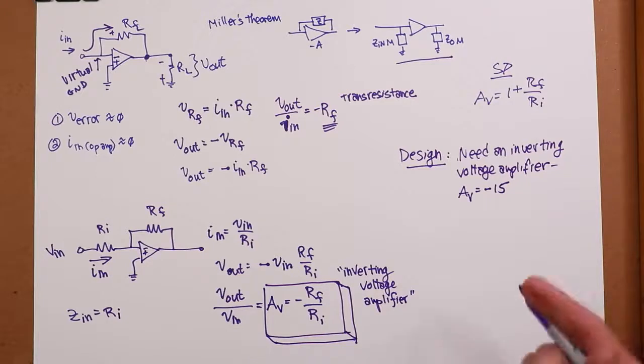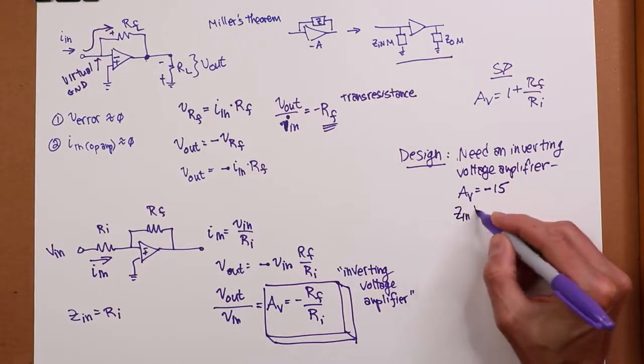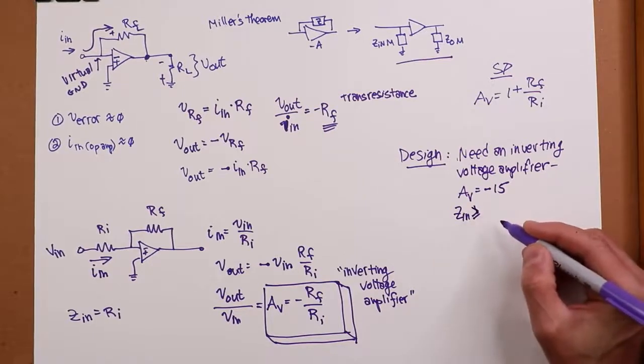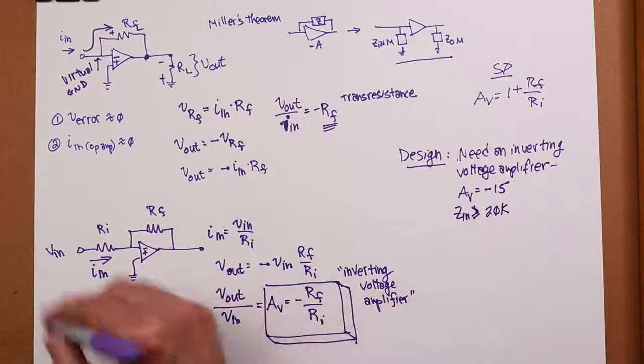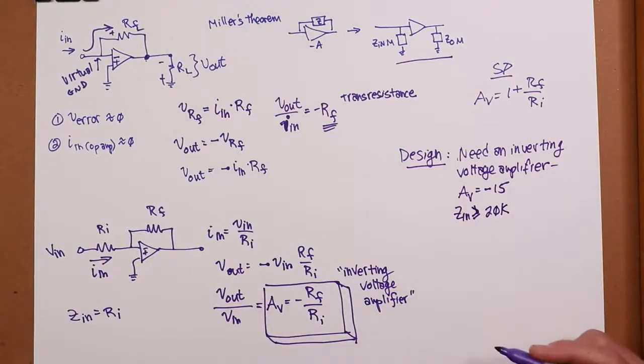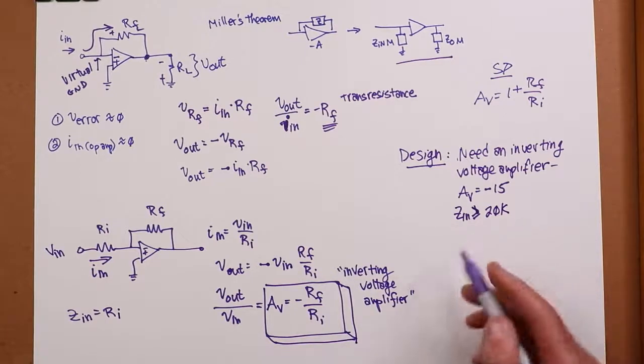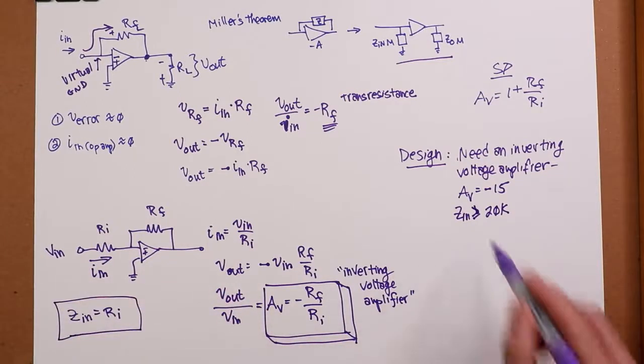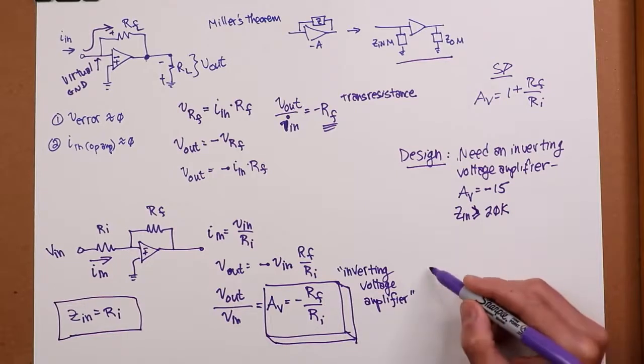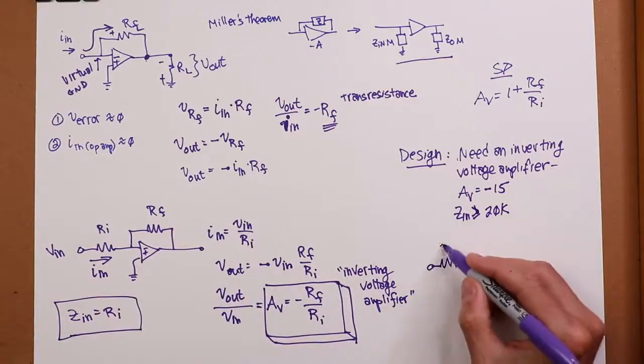How do I design that circuit? Well, the ZN dictates what RI has to be. Because RI is setting ZN. If I need the ZN of at least 20K, that forces my hand. I have to have an RI of at least 20K.